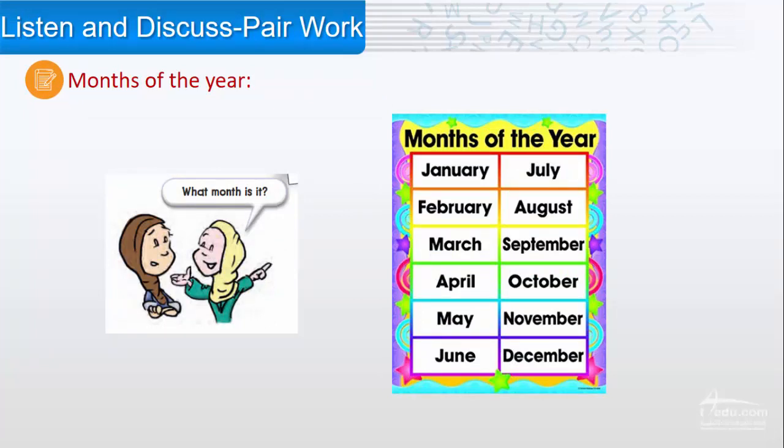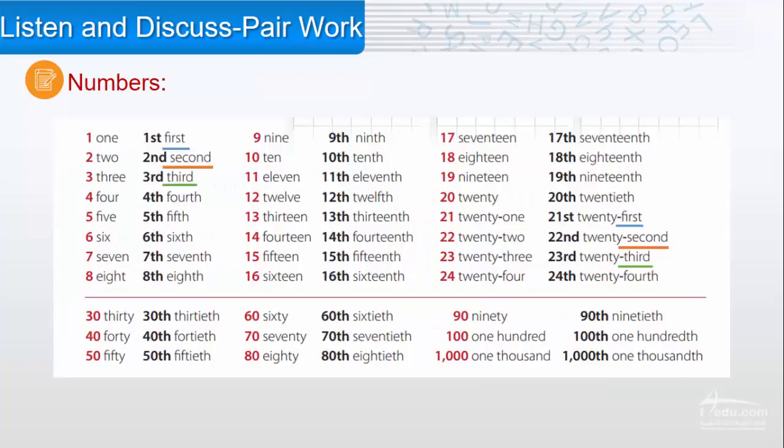The months of the year: January, February, March, April, May, June, July, August, September, October, November, December. What month is it? Numbers.